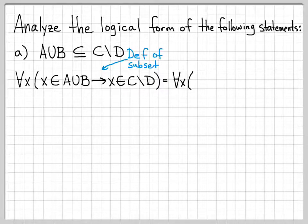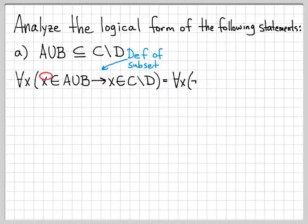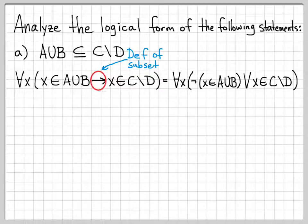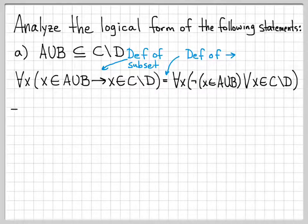So this is equal to for all x. Now I'm going to work on the conditional connective and replace it with a logically equivalent expression. Any time I have an arrow, I can replace that with not the first thing or the second thing — that's the definition of our conditional connective. So I'm going to take not the first statement or the second statement, eliminating the conditional connective by replacing it with an equivalent logical expression.